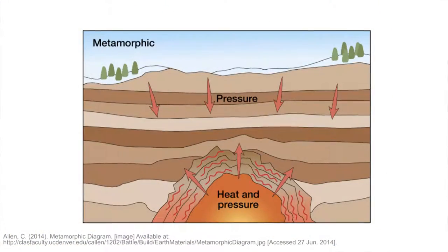The final rock type is called metamorphic rocks. These rocks are formed by changing one type of rock into another due to heat, pressure, or chemical reactions inside the earth as a result of squashing, stretching, or shear. For example, marble is formed from limestone and slate is formed from shale.